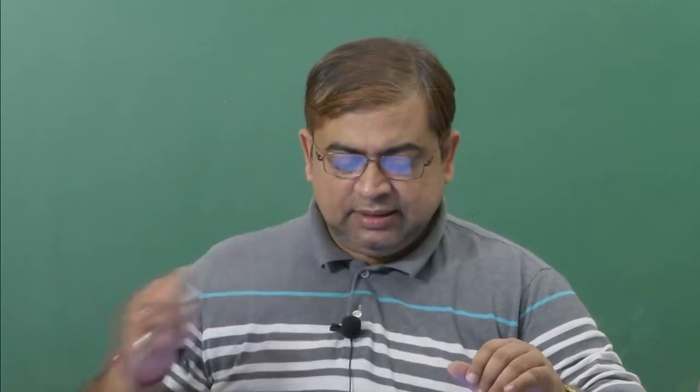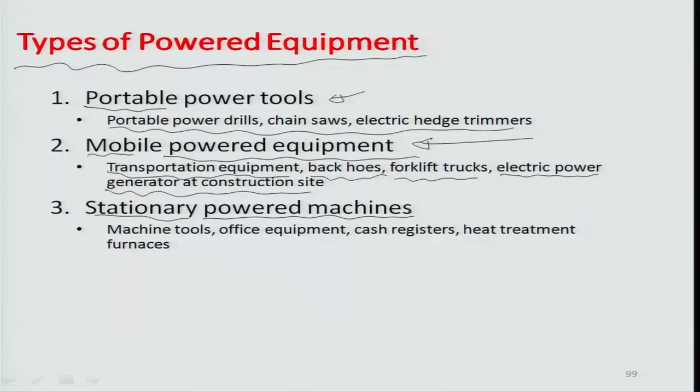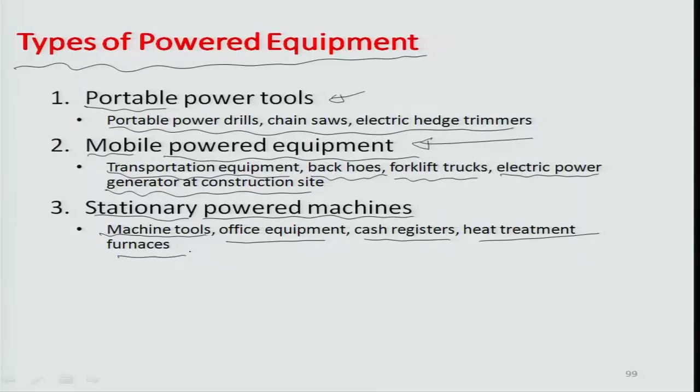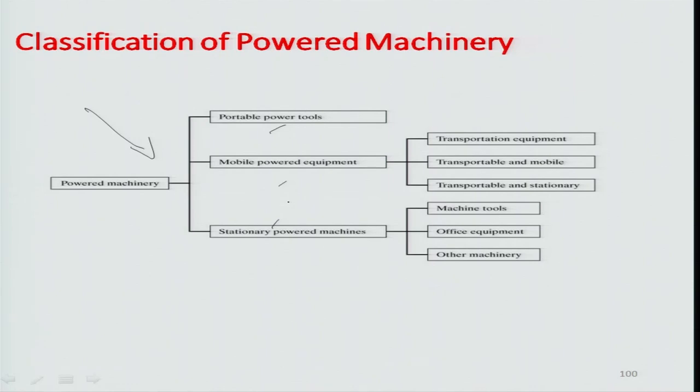These mobile powered equipment are typically used in heavy industry work. Then there are stationary powered machines — for example, machine tools like lathes and milling machines, which require vibration prevention through a firm base and grouting to a fixed area. Office equipment, cash registers, and heat treatment furnaces are also examples where, once stationed, it is not advisable to move them. These are various types of powered equipment in industrial and work-machine systems, classified by how they perform and how power is applied.